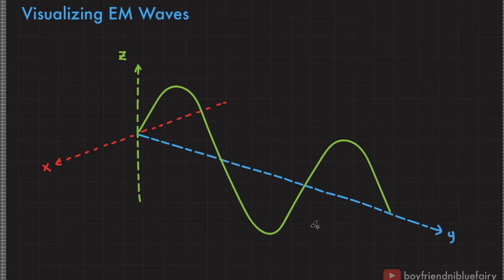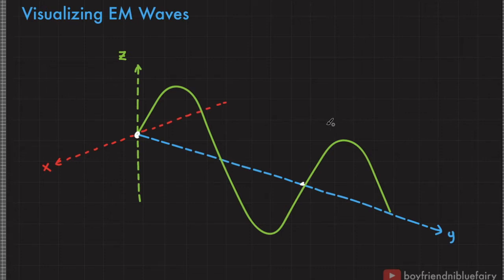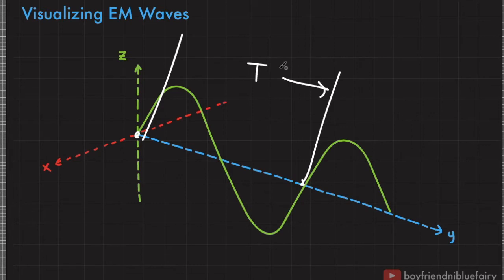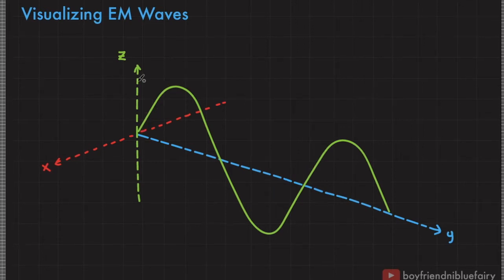The time it takes for one complete wave cycle is called a period. If this axis represents time instead of the y-axis, then this point to this point is equivalent to one period. So, how do we visualize an electromagnetic wave?